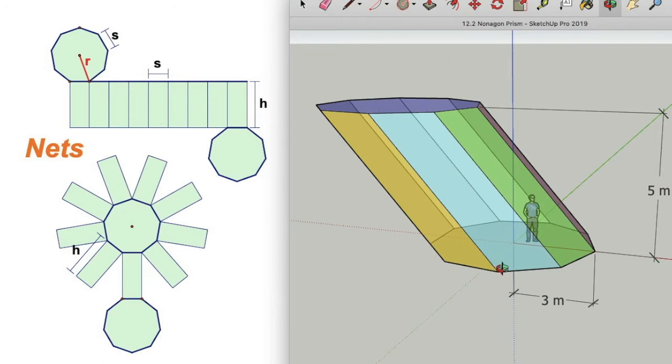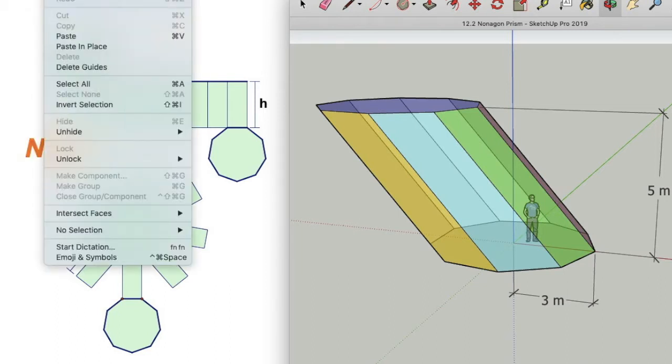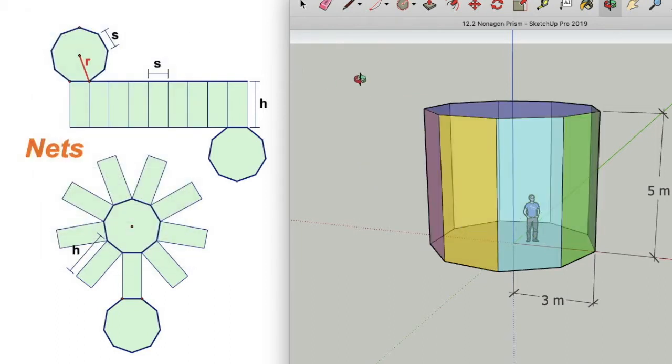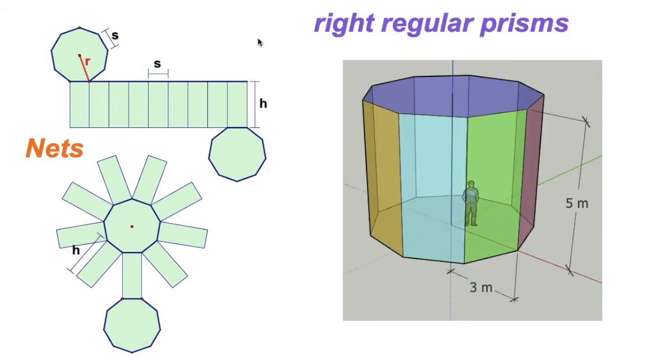We're just going to say you took that nonagon and you extrude it. You pulled it straight up, and it looks like that. Okay, enough playing. Let's get to business here.